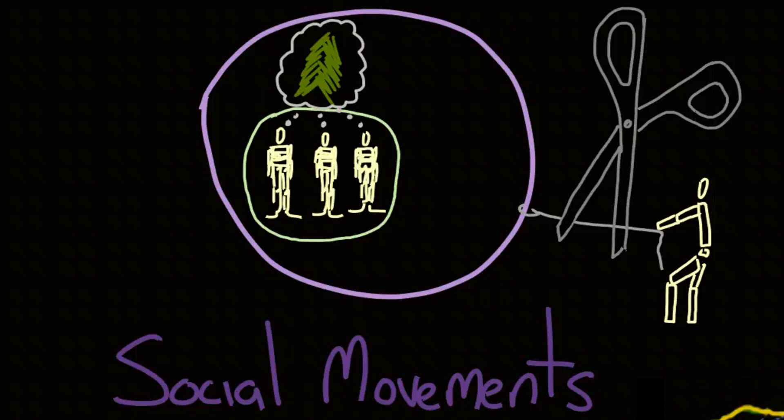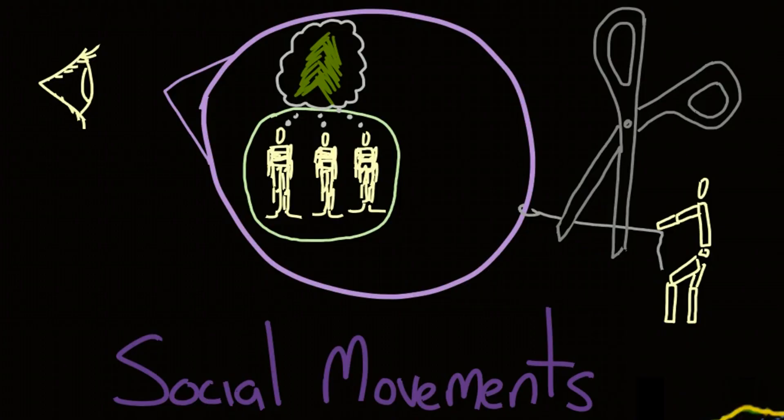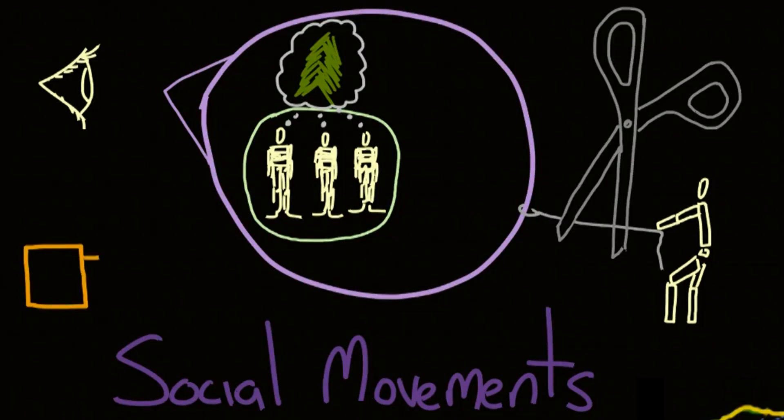According to relative deprivation theory, people who perceive some sort of deprivation or inequality will band together to try and change that in society. But according to resource mobilization theory, they must have the resources to fund the movement, to publicize it, to recruit members, to make an impact. Rational choice theory states that the patterns of behavior in society depend on the choices of people who weigh different actions and choose the one that benefits them the most.